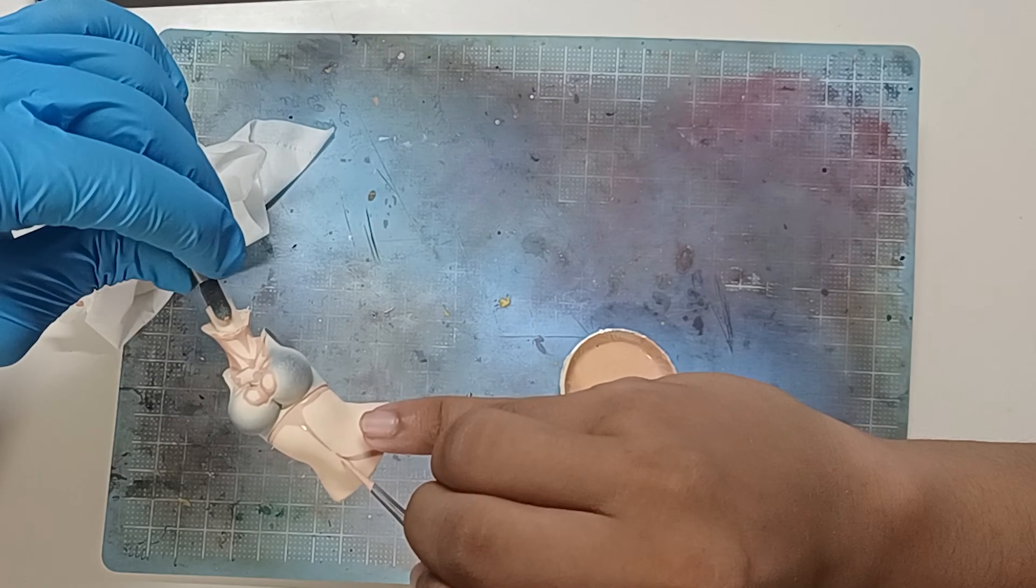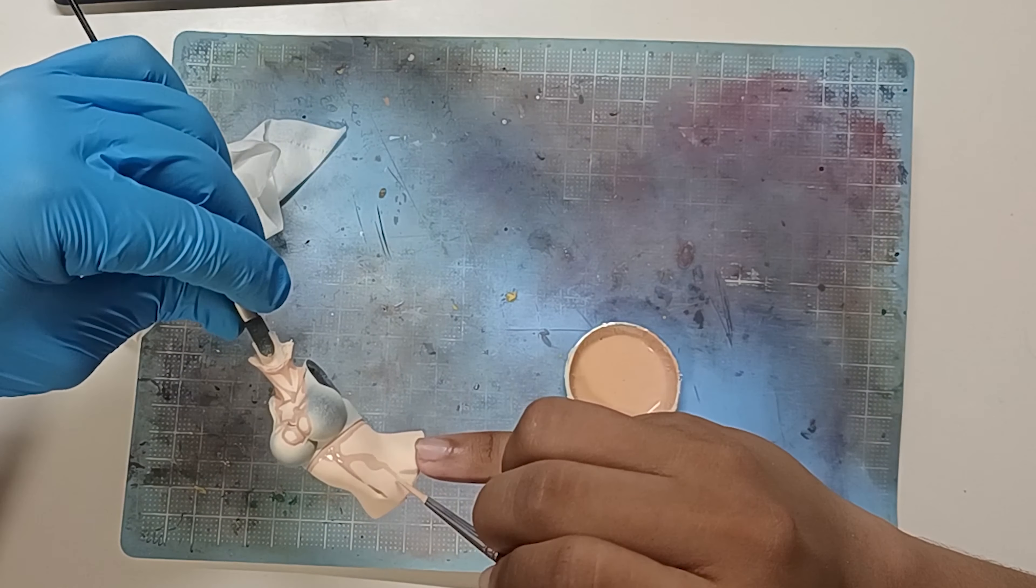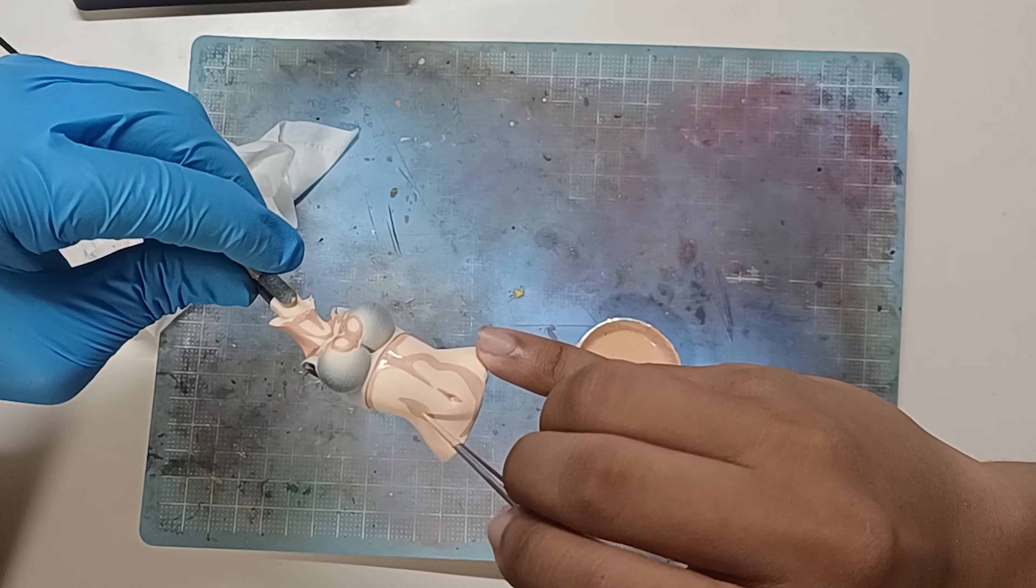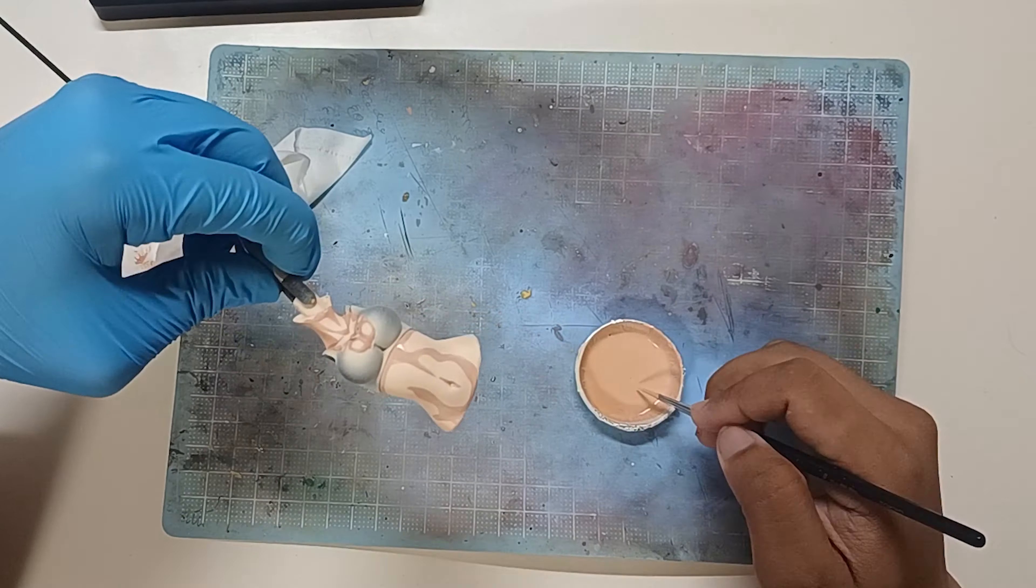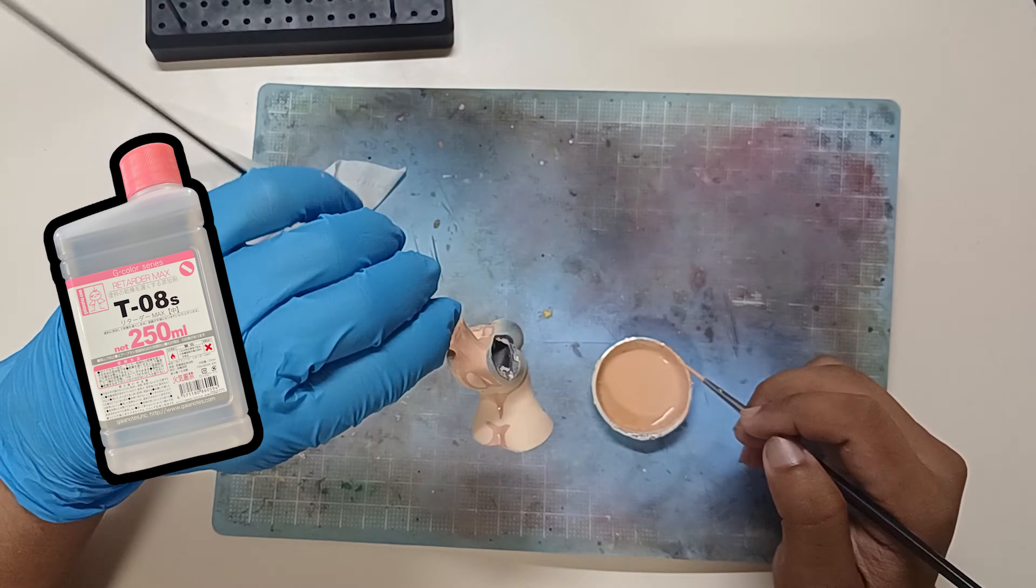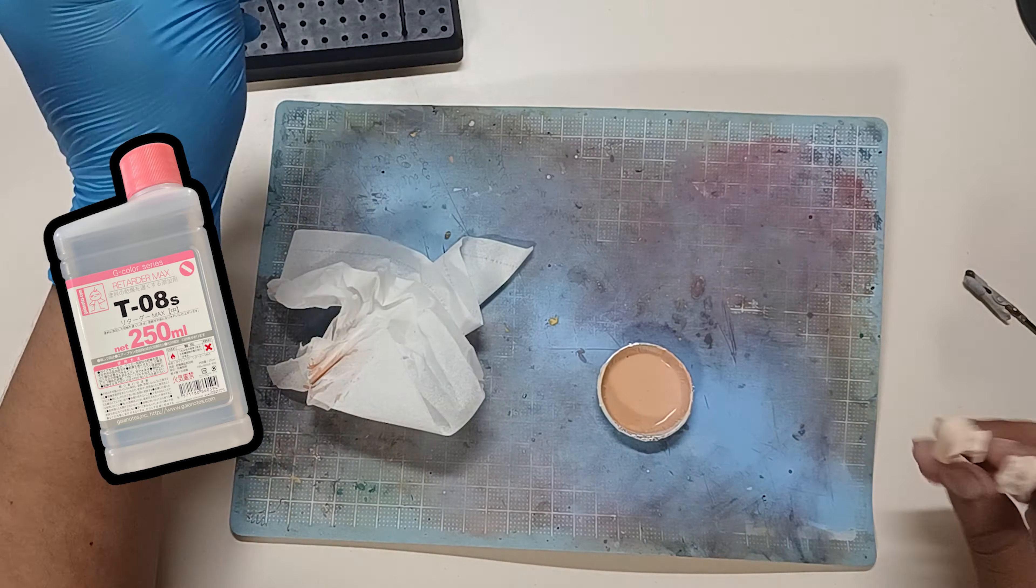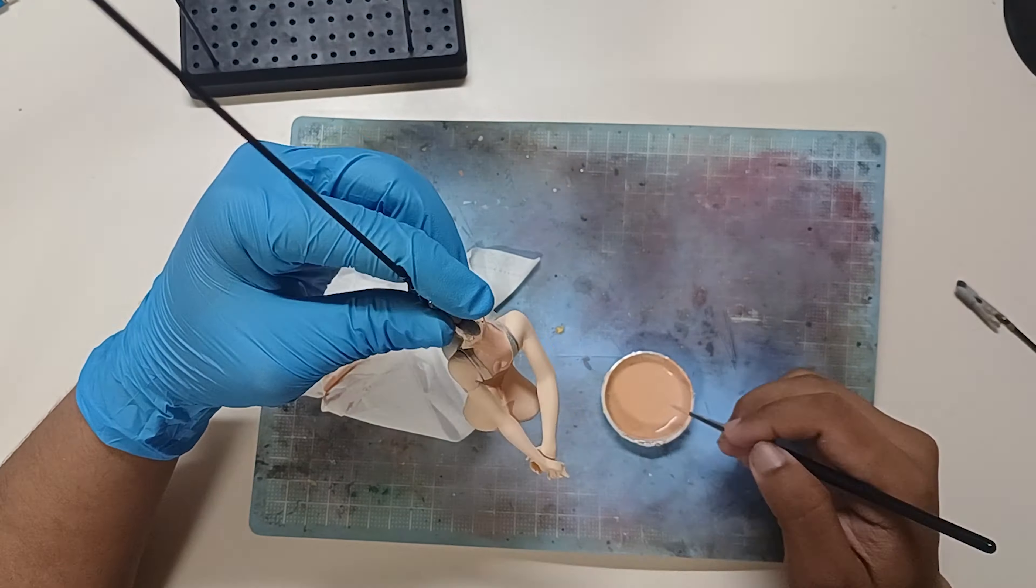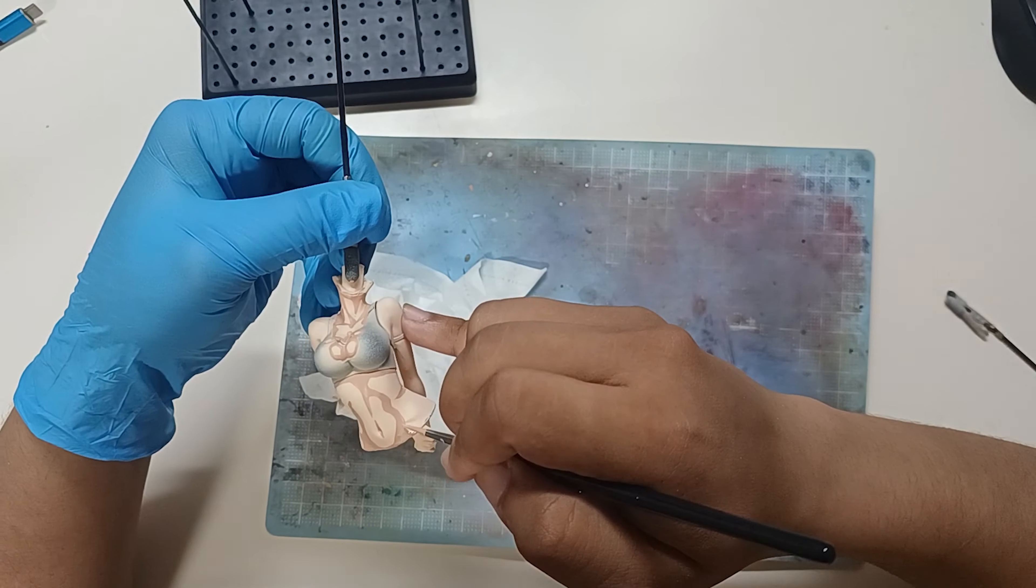Also in the video anytime you see me adding something with a dropper, it is either the retarder which is used to prevent paint from drying quickly, or it is thinner which also does the same thing.